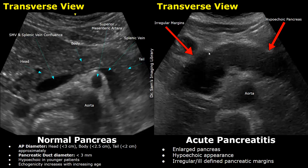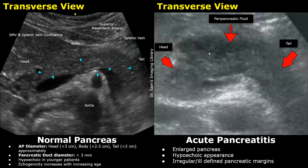In this image, you can see a heterogeneous, enlarged pancreas along with hypoechoic peripancreatic fluid. The pancreas has irregular, ill-defined margins.